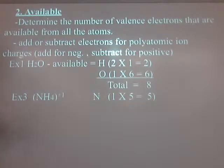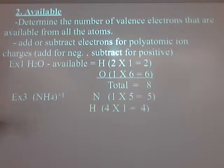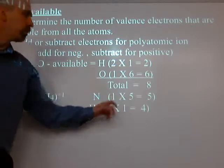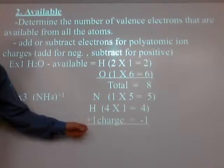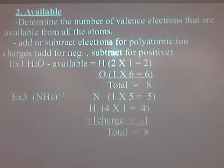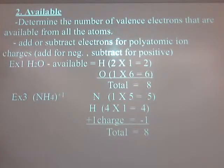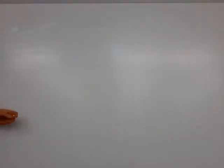For ammonium's available electrons: hydrogen has one, times four; nitrogen has five because he's in group five; and we take away one electron because of the positive charge — total of eight available. If you didn't do that, you'd have an odd number, which would be very difficult since electrons like to be paired. Lone unpaired electrons are free radicals — very reactive, as we saw in free radical halogenation.